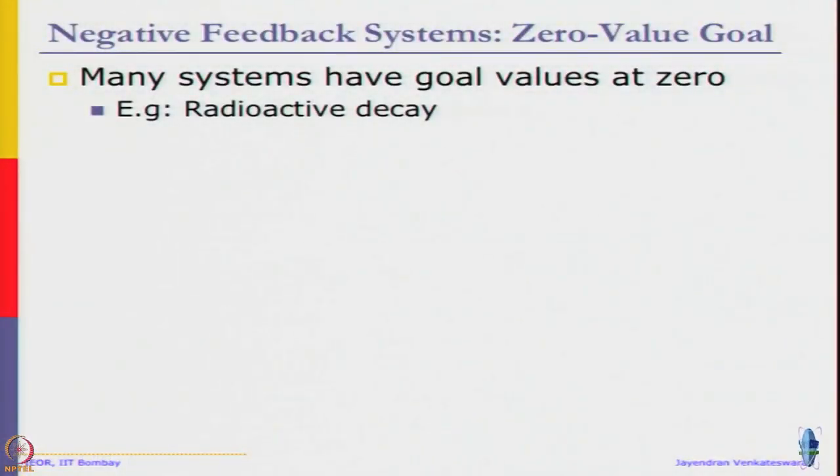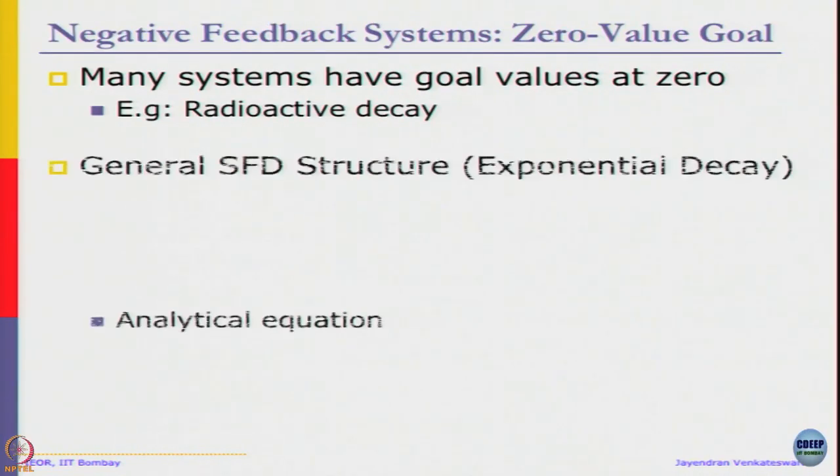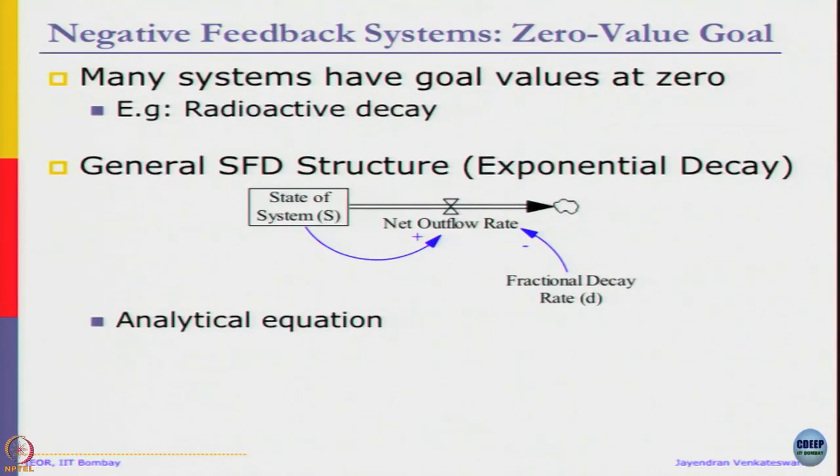For example, radioactive decay is also an exponential system, exponential decay. The general structure is that we do not really explicitly specify the goal because the goal is anyway zero. So you do not need to explicitly define it, so the system becomes much more compact.